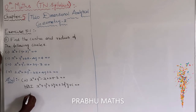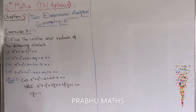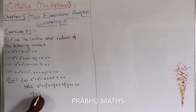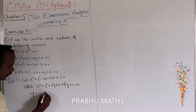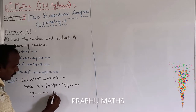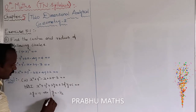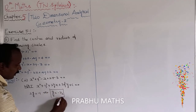2g is equal to minus 1, which implies g is equal to minus 1 by 2. That is the g value is found.